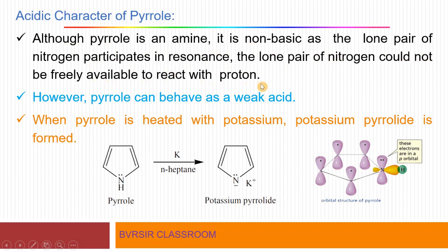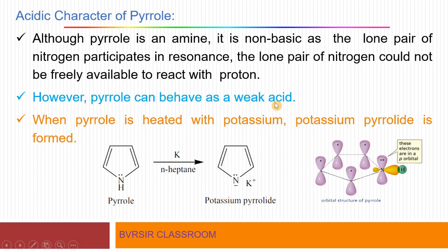The lone pair of nitrogen could not be freely available to react with a proton, so pyrrole cannot act as a base. However, pyrrole can behave as a weak acid — not a strong acid. When pyrrole is heated with potassium, potassium pyrrolide is formed, where the H on nitrogen is replaced by K+. Only under such drastic conditions does it donate H+, so it is considered a weak acid.